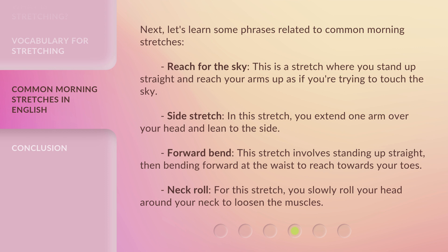Reach for the sky — this is a stretch where you stand up straight and reach your arms up as if you're trying to touch the sky. Side stretch — in this stretch, you extend one arm over your head and lean to the side. Forward bend — this stretch involves standing up straight, then bending forward at the waist to reach towards your toes.